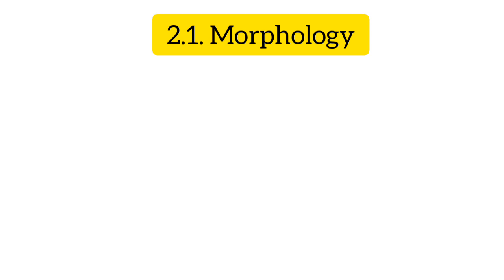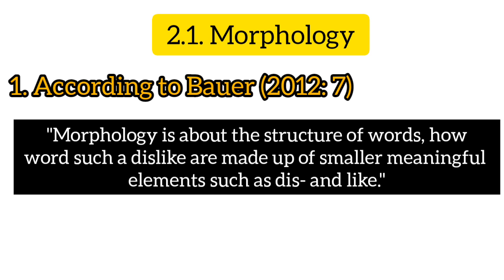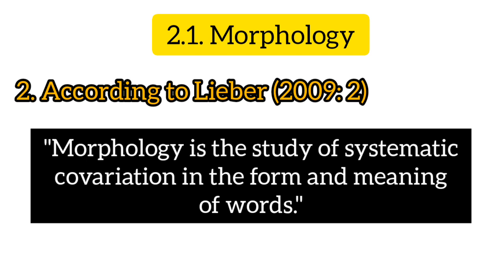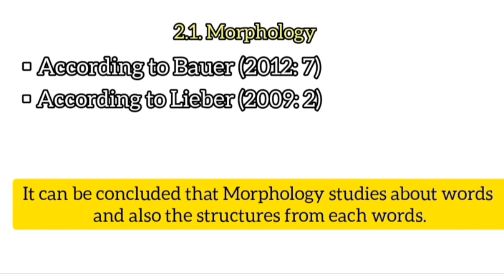I'm going to discuss morphology from some experts. According to Bauer, morphology is about the structure of words — how words such as 'dislike' are made up of smaller meaningful elements such as 'dis' and 'like.' According to Lieber, morphology is the study of systematic co-variation in the form and meaning of words. From these two experts, I can conclude that morphology studies words and their structures.